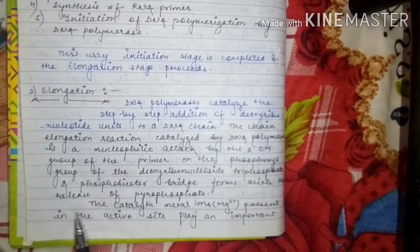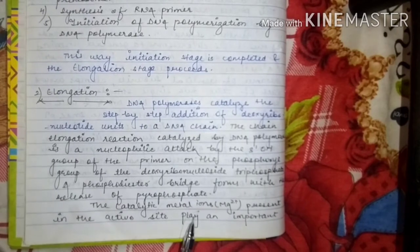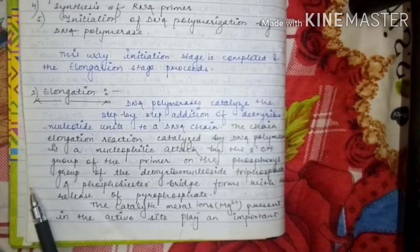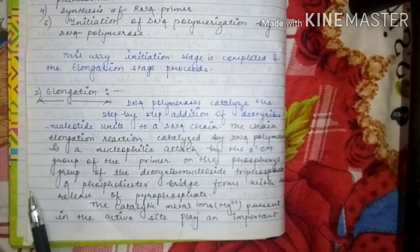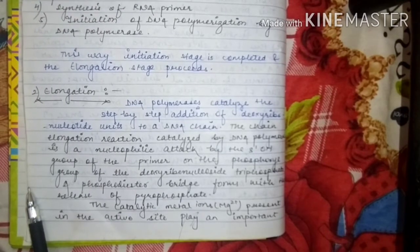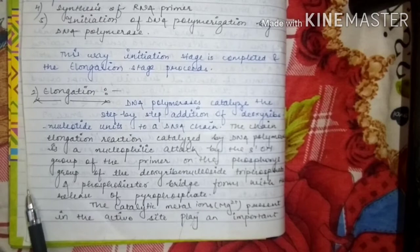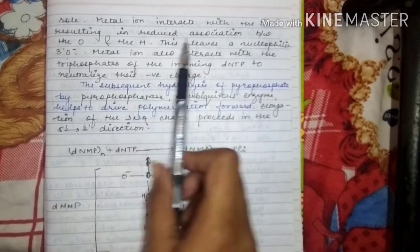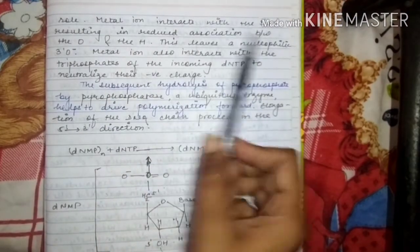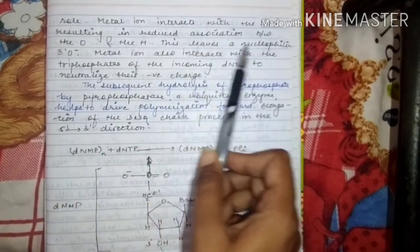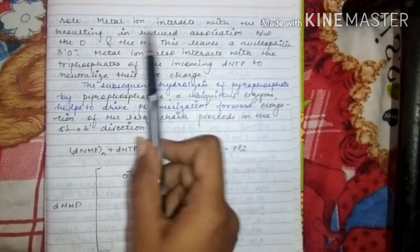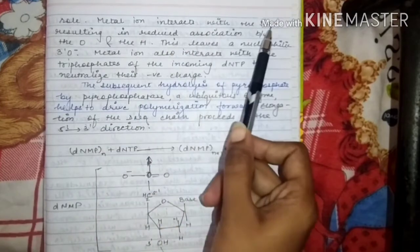The catalytic metal ions present in the active site play an important role in the elongation reaction. These metal ions interact with the 3'OH, resulting in reduced association between oxygen and hydrogen, making the 3'oxygen a better nucleophile — a nucleophilic 3'O⁻.